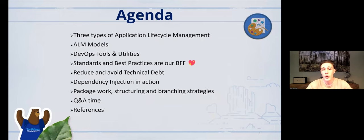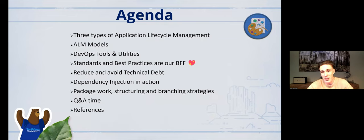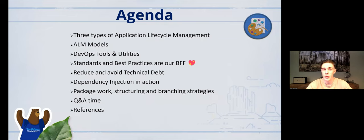Today we'll talk about three types of application lifecycle management: ALM models, DevOps tools and utilities, standards, and best practices. We'll reduce and avoid technical debt. In depth, we'll talk about dependency injection in action, work with packages, structuring, branching strategies. We'll have a small Q&A, and in the end we'll share a list of very good references.